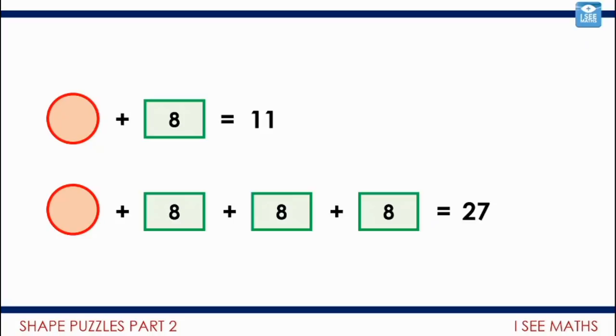So each of those two rectangles must be worth eight for me to be adding 16 by adding two rectangles. That, of course, means the other rectangles, all the rectangles are worth eight. And the circle must be worth three.